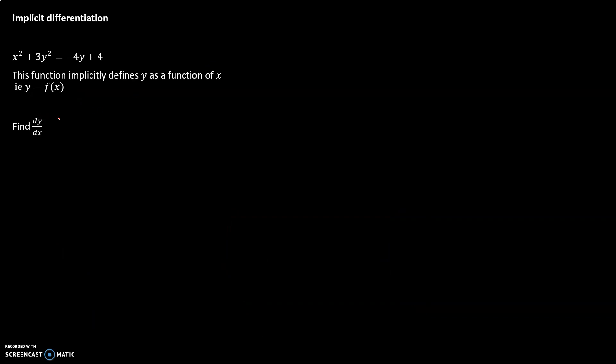The cool shortcut I mentioned at the beginning of the video is a way to calculate derivatives for calc 1 functions — specifically implicit functions. If y is an implicit function of x and we have it written as x squared plus 3y squared equals negative 4y plus 4, this function has many different versions of y as a function of x that make this true.